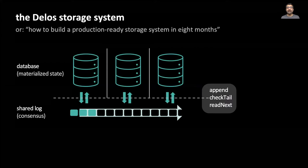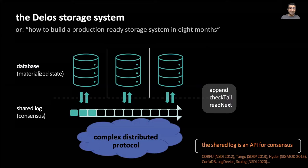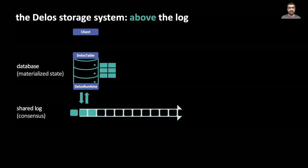In Delos, each server stores a local copy of the full database. This database is kept consistent via appends and reads on a shared log. This approach is based on a body of research over the last decade that shows that the shared log effectively acts as an API for consensus, hiding the complexity of consensus from the database. I'll now describe the database layer and then talk about how we realized this shared log.